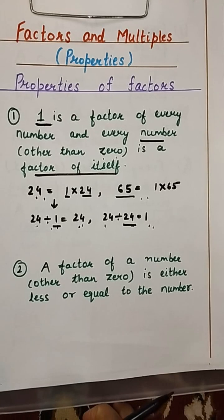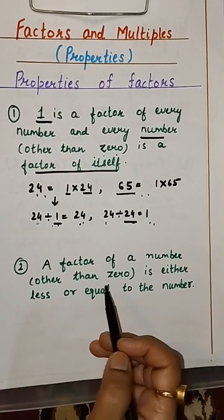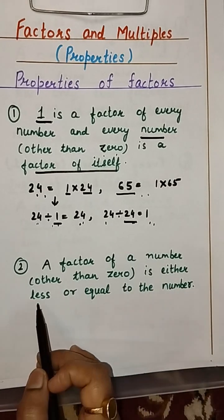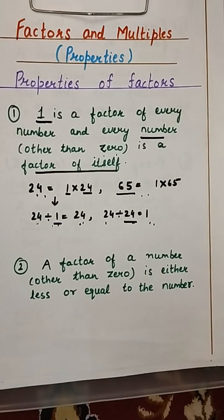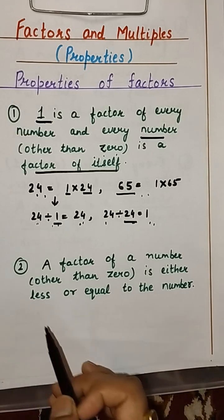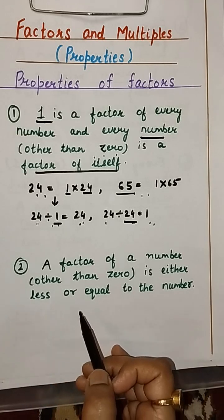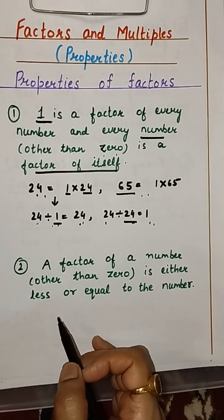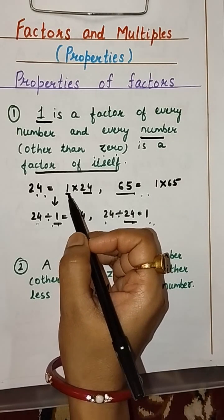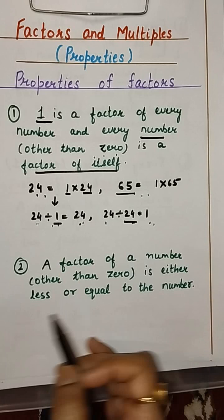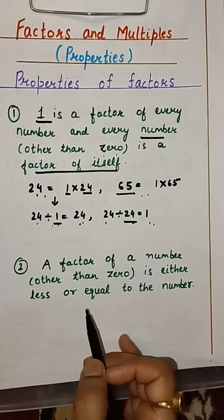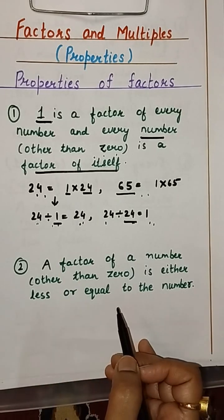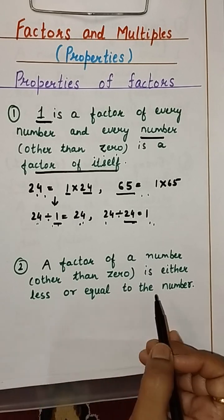Second property: a factor of a number other than 0 is either less than or equal to the number. This means that any factor of a number will either be equal to the number or less than it. From the first property we know 1 and the number itself are factors; all remaining factors lie between them.